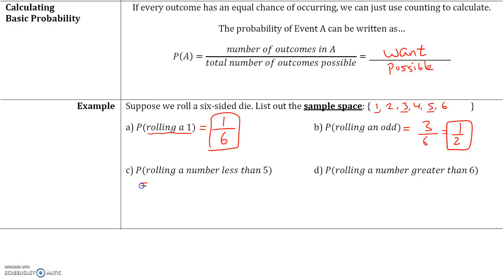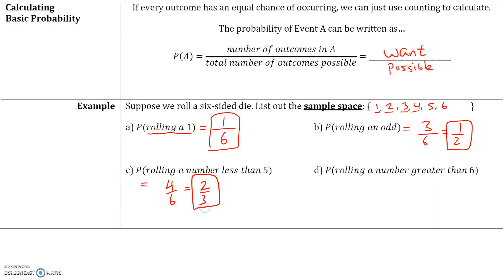Let's look at the probability of rolling a number less than five. The event is rolling a number less than five. How many numbers are less than five? We have 1, 2, 3, 4 — four numbers that are less than five. The total number of outcomes is six. Be sure to reduce your fraction, so the probability of rolling a number less than five is two-thirds.